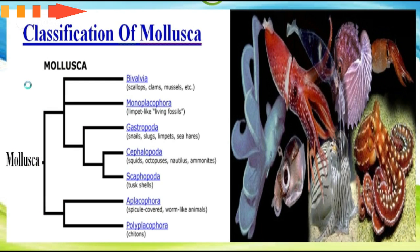Now we will discuss the classification of Phylum Mollusca. The main classes are Bivalvia, Monoplacophora, Gastropoda, Cephalopoda, Scaphopoda, Aplacophora, and Polyplacophora. The representative members of Bivalvia include scallops, clams, mussels, and related members of this family. You can see them here with examples.